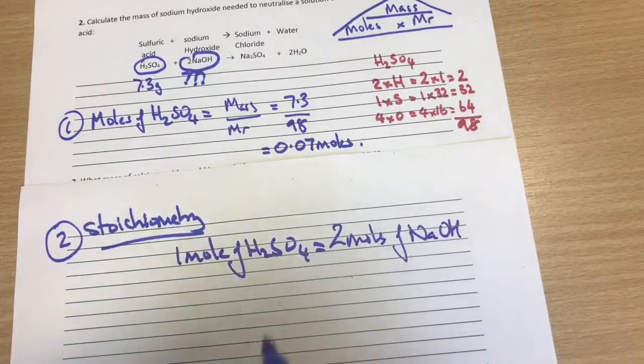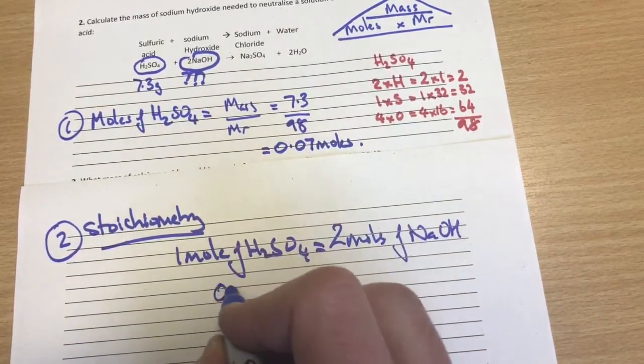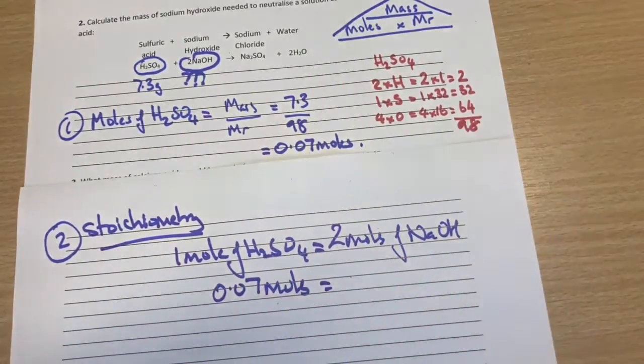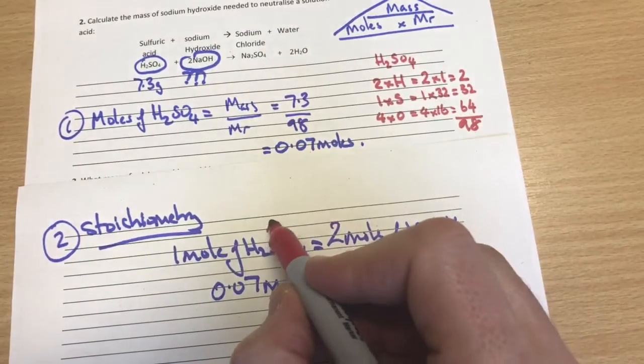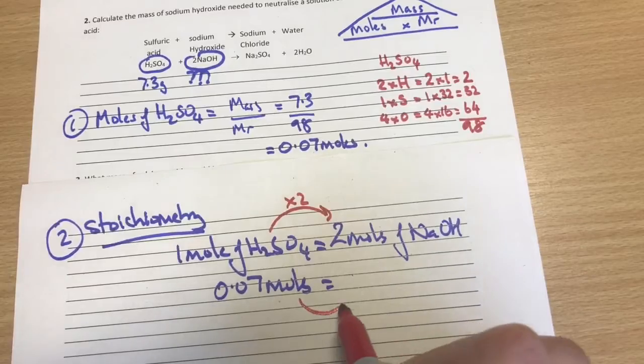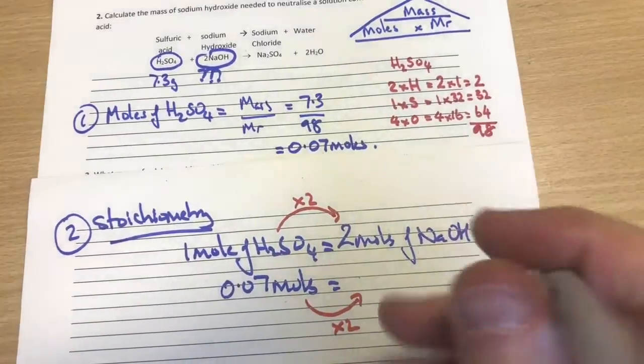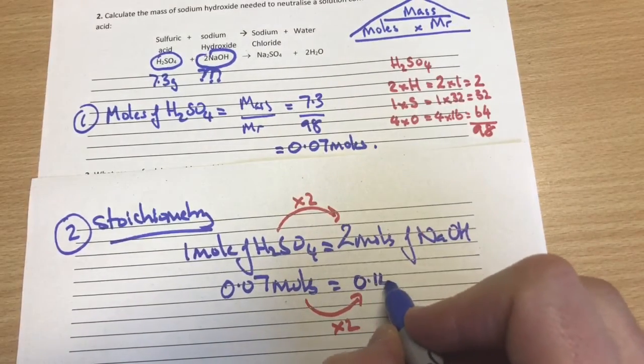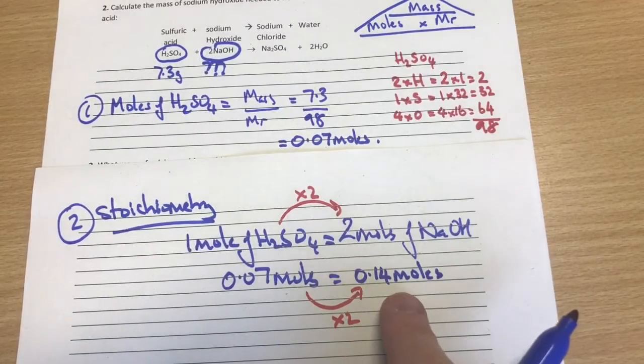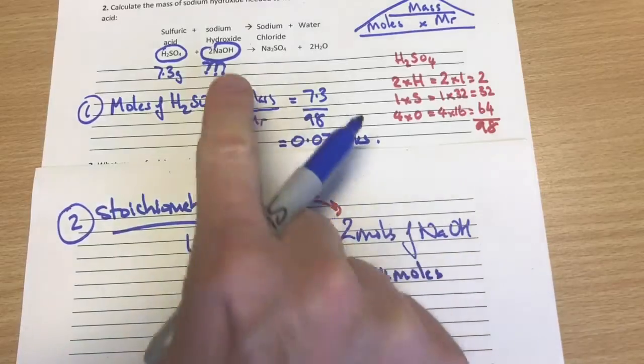We've just worked out that we've got 0.07 moles of the H2SO4. So it's 0.07 moles here. And what we now need to do is just check our ratio. So we've gone from here to here. To do that we times by 2. Therefore I'm going to do the same here and times by 2. And that's going to give me a total of 0.14 moles when we double that up. So now we know there's 0.14 moles of sodium hydroxide that have reacted in this equation.